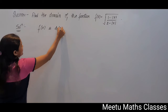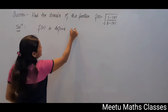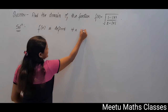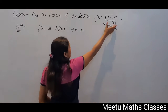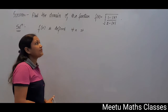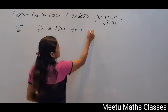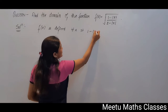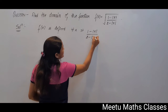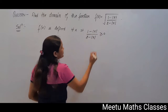So your function f(x) is defined for all x such that the square root should be positive. So (1 - |x|) / (2 - |x|) should be greater than or equal to 0.